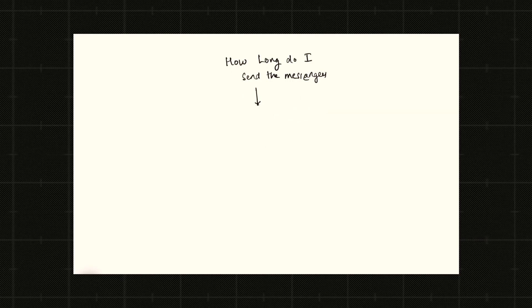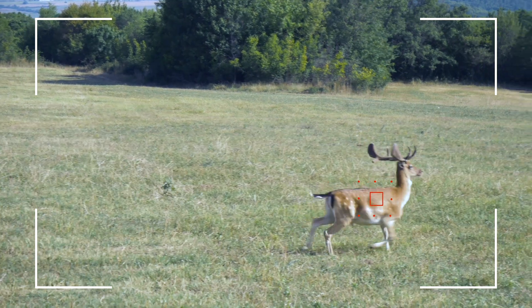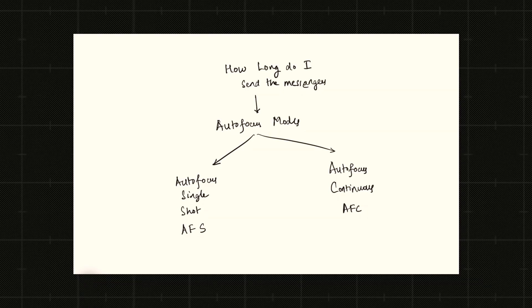Now that we have decided the number of messengers and which messengers to engage with, comes another command: how long do we want to deploy them on the field? You have two options. You can send the messengers out to track your subject once, report back, get your focus, and then completely forget about it — this is AF-S. Or, because there is movement in the scene, you want the messengers to stay on the field and keep getting you information on the subject's movement so that every shot in the series turns out in focus — this is AF-C, autofocus continuous.